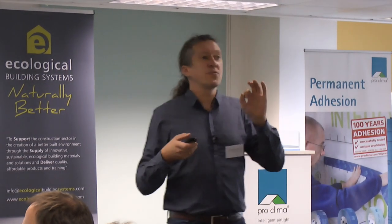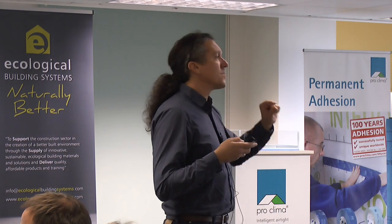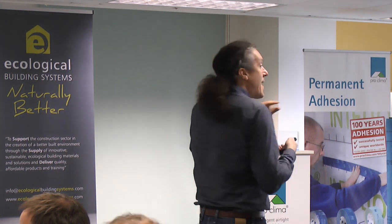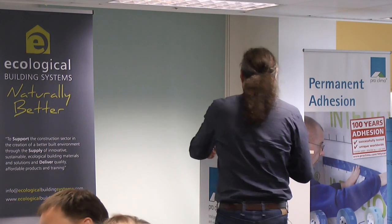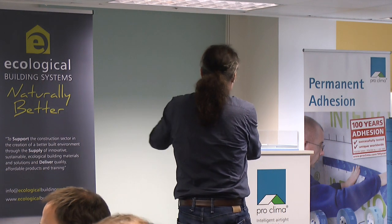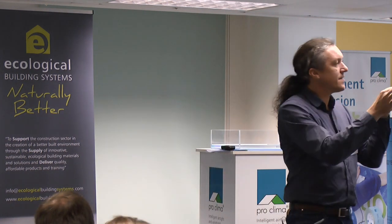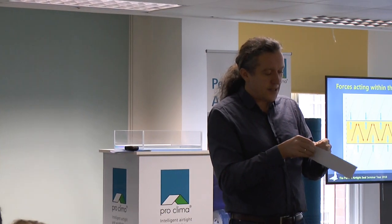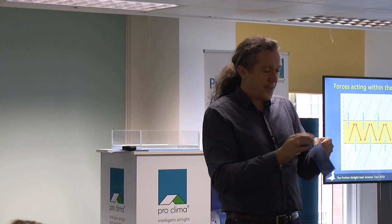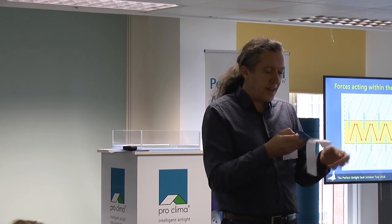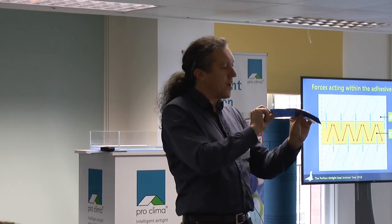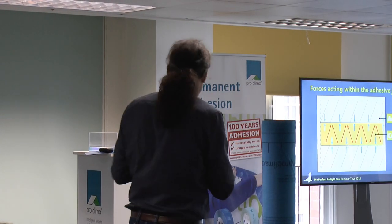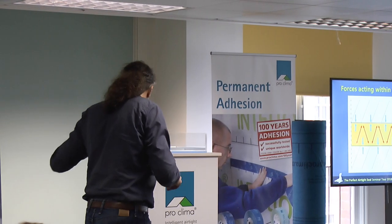First, I would like to describe the function of the thin layer — the thin glue layer that is on the backing of the tape. This is the Tescon Varna tape. When you release the release paper, you can see the thin layer of glue; it's a little bit shiny. The other part is the backing, so the layer is rather thin. And in this thin layer, different forces are working.